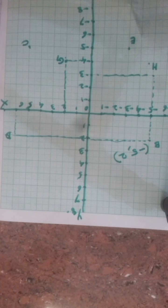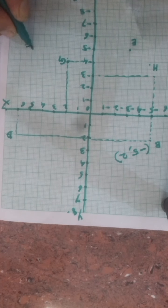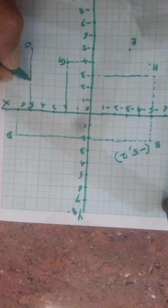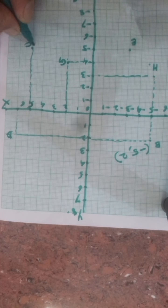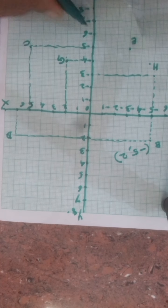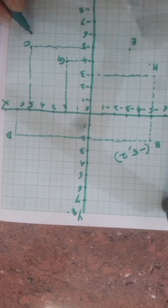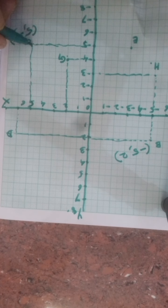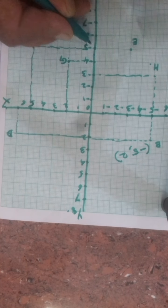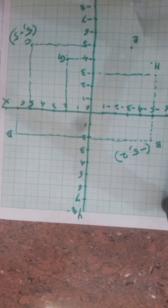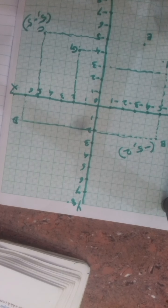Next, the coordinates of C. C is a point here. See the coordinates on the x-axis first, then the y-axis. The x-coordinate is 5 and the y-coordinate is minus 5. So the coordinates of C are 5 comma minus 5.